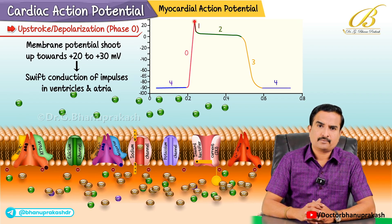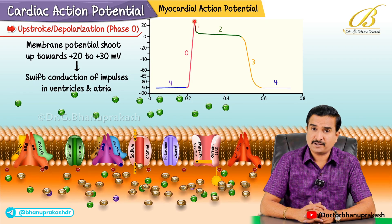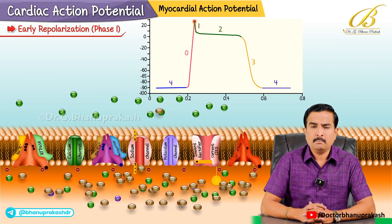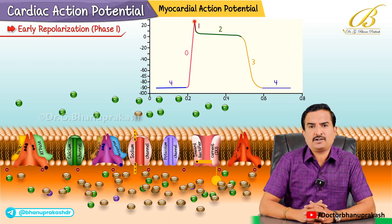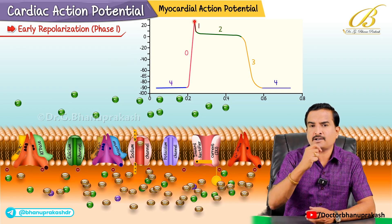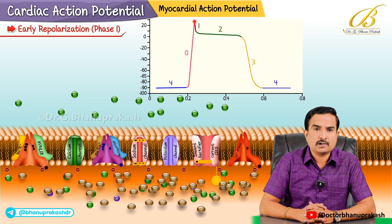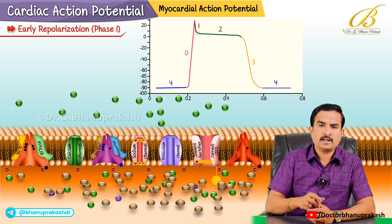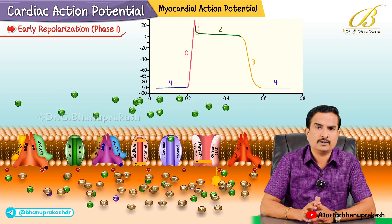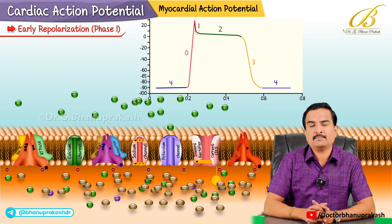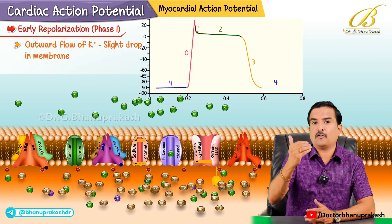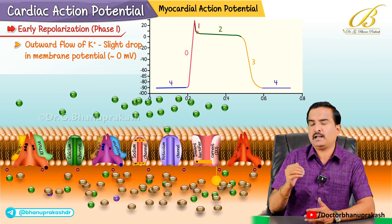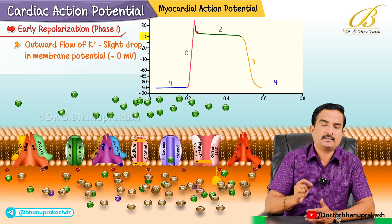As you can see, we are at the peak of depolarization, that is phase 0. After that we have a small phase called early repolarization, phase 1. After the very quick depolarization, at the peak the fast sodium channels inactivate. There is also a brief opening of transient outward potassium channels, letting a small amount of potassium out. This outward flow of potassium causes a slight drop in the membrane potential, taking it from its peak towards approximately zero millivolts. This is phase 1.